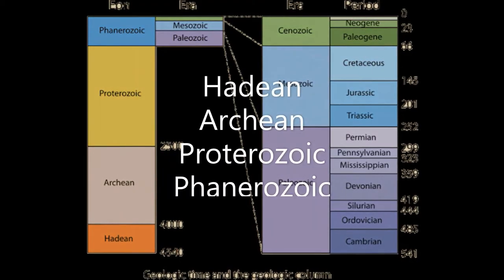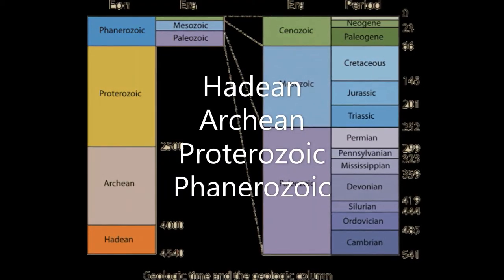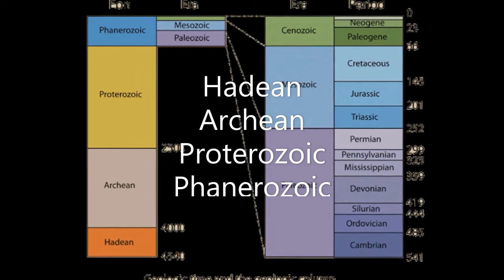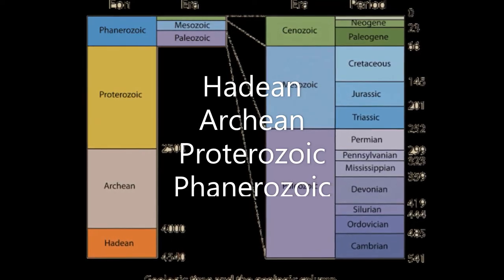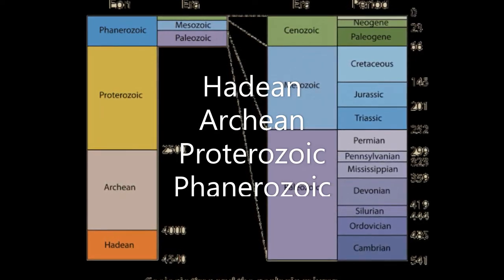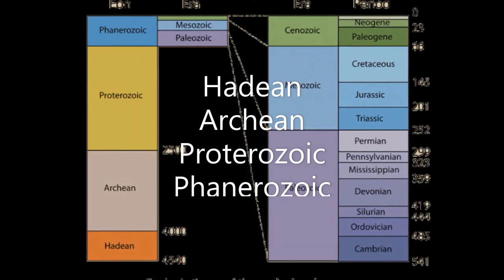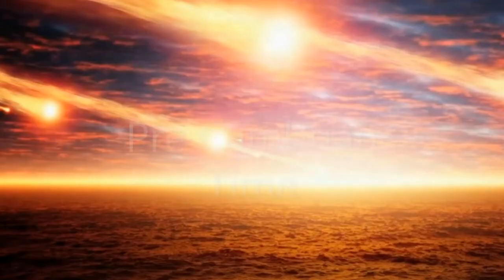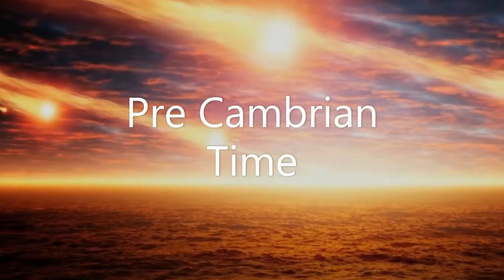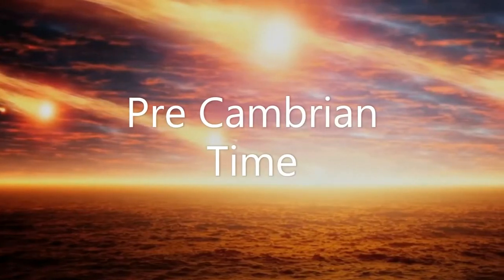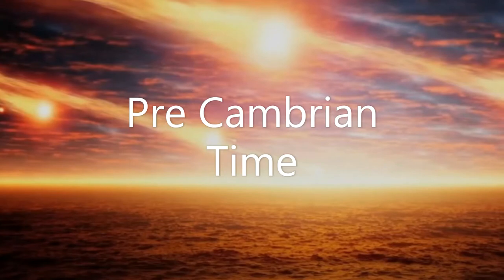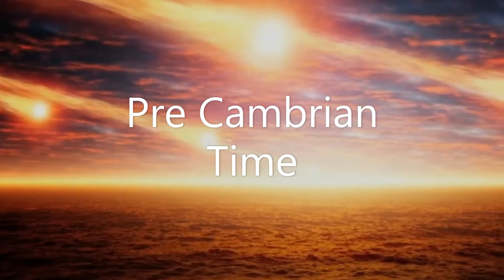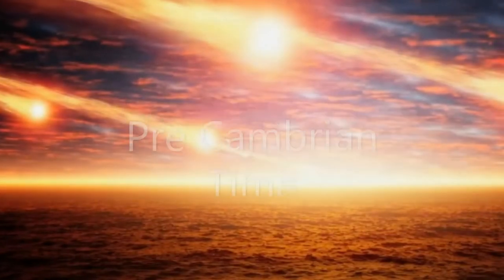We will start with the largest time period, the Eons. There are four of them: the Hadean, Archean, Proterozoic, and Phanerozoic. Three of these — the Hadean, Archean, and Proterozoic Eons — are often lumped together to make Precambrian time.